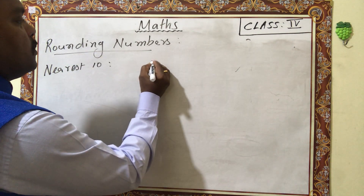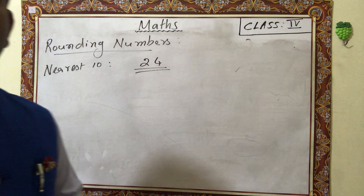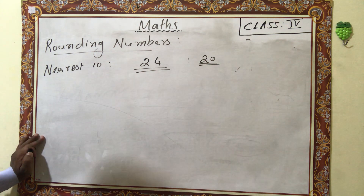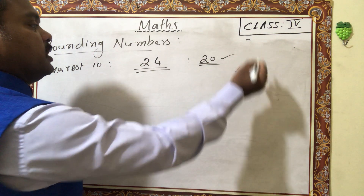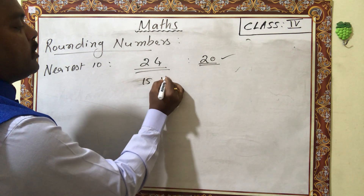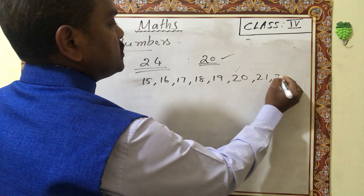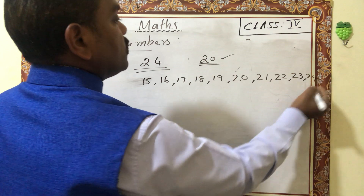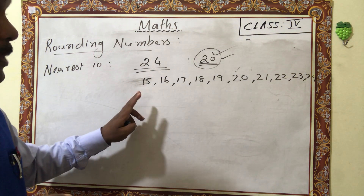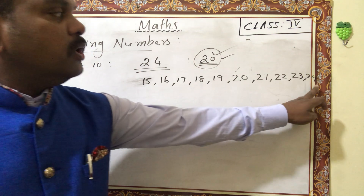Now, which numbers round to a given value? For example, numbers that round to 20 when rounding to the nearest 10: from 15 to 24 all round to 20. So 15, 16, 17, 18, 19, 20, 21, 22, 23, and 24 all round to nearest 20.